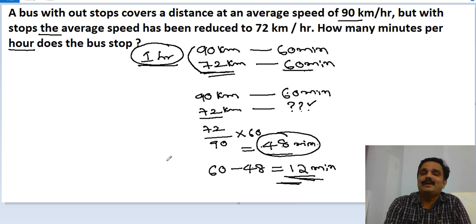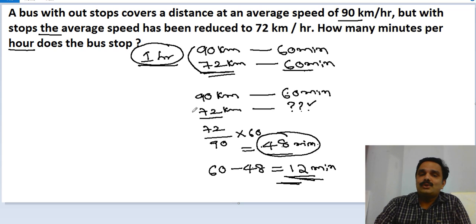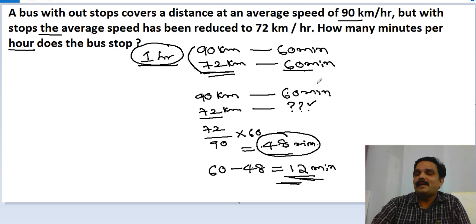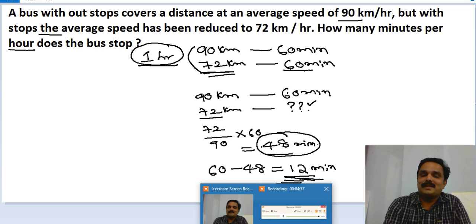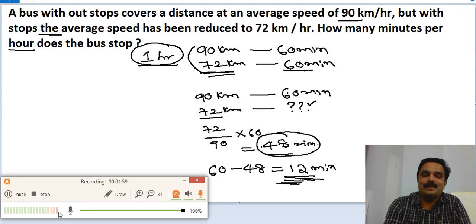To summarize: to cover 90 kilometers, it takes 60 minutes. To cover 72 kilometers, it should take 48 minutes — but it actually took 60 minutes, meaning 12 extra minutes were spent stopped. Therefore, in one hour, the bus stopped for 12 minutes. This is how to approach this type of question.